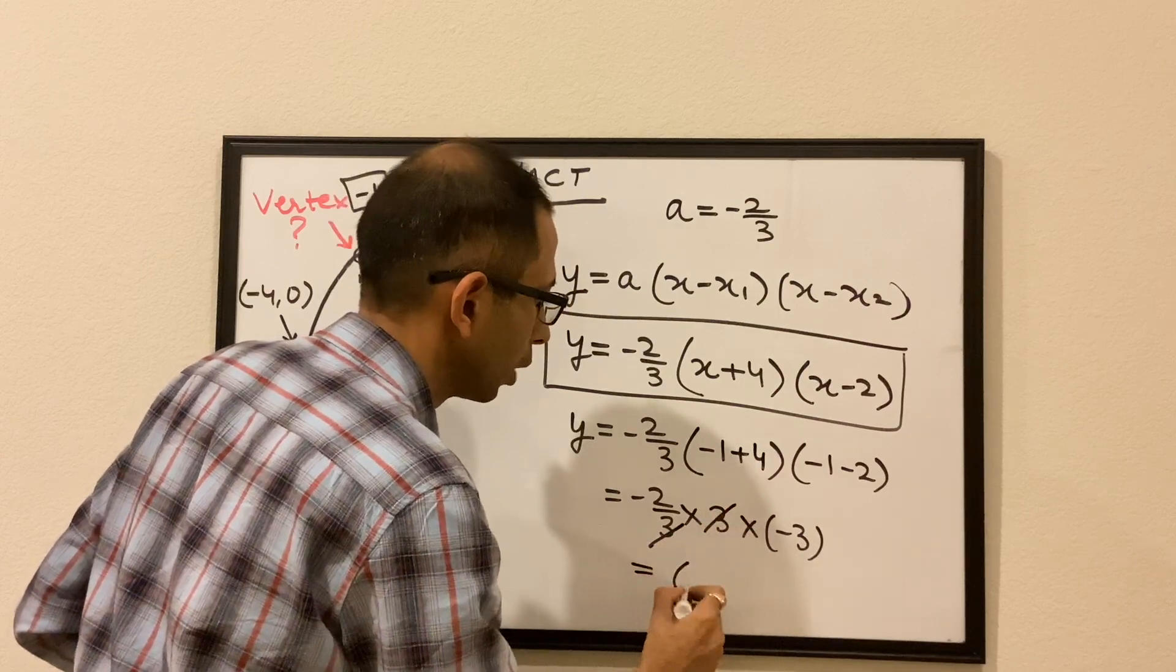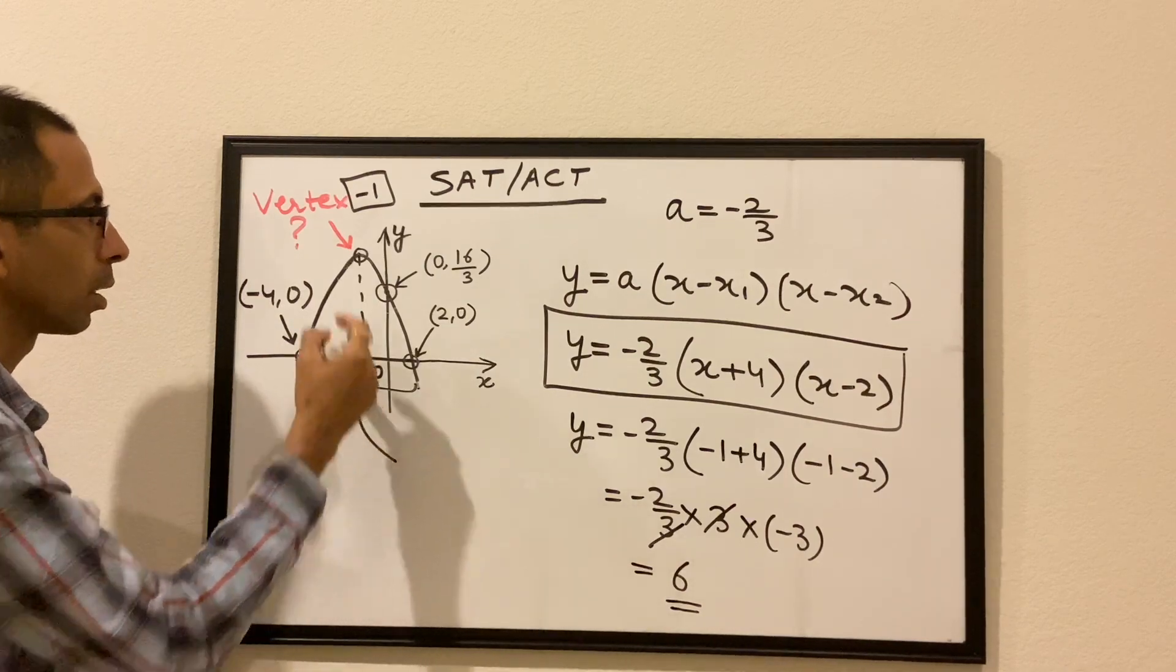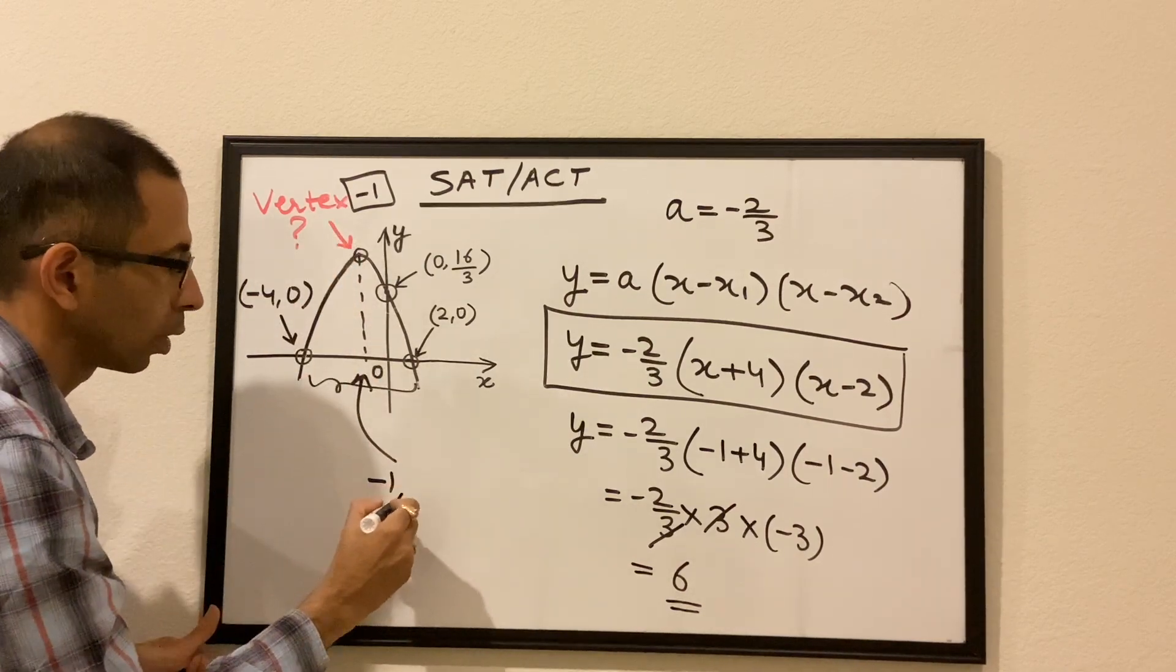So the y value would be 6, -2 times -3. So finally, the coordinate of the vertex is -1,6.